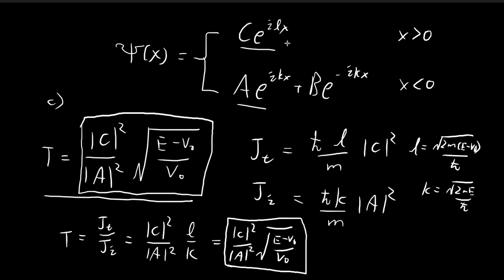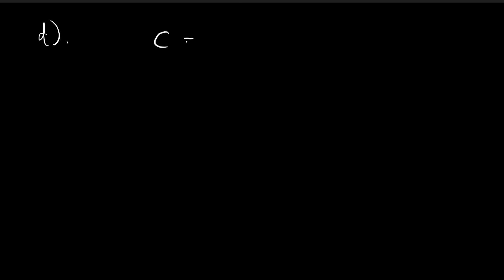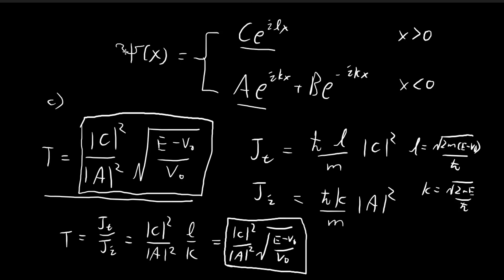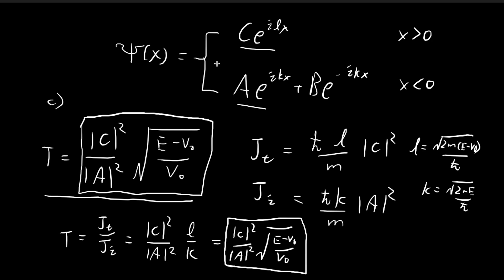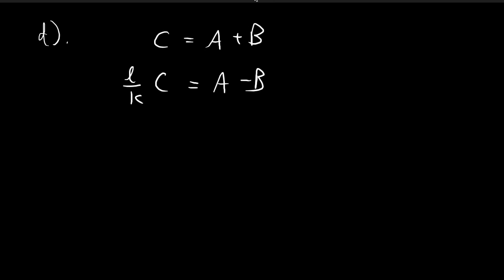Moving on to part D, we need to actually calculate the transmission coefficient for this setup. Using the continuity requirements, we know that c equals a plus b. And considering the continuity of dψ/dx, which was shown in the last video, you can show that a minus b equals L divided by k times c. What we want to find is the transmission coefficient, so we need to evaluate the ratio |c|²/|a|², expressing c in terms of a.